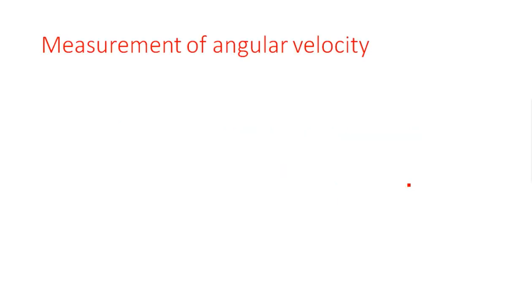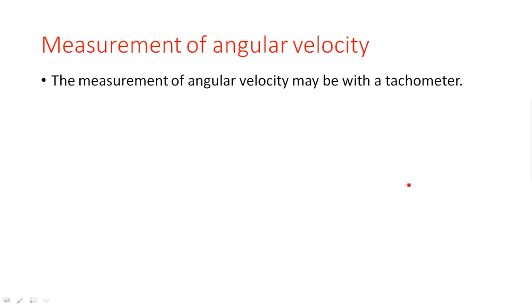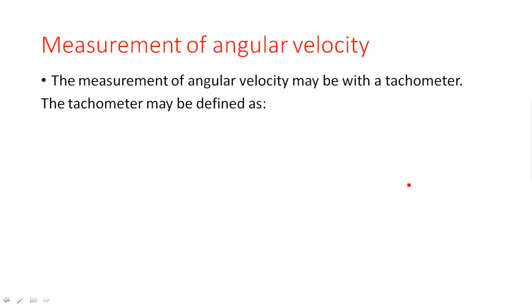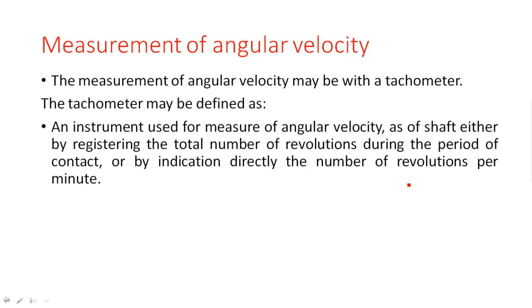In this case I am going to explain angular velocity. The measurement of angular velocity is done with a tachometer. A tachometer may be defined as an instrument used for the measurement of angular velocity of a shaft, either by registering the total number of revolutions during the period of contact, or by directly indicating the number of revolutions per minute.